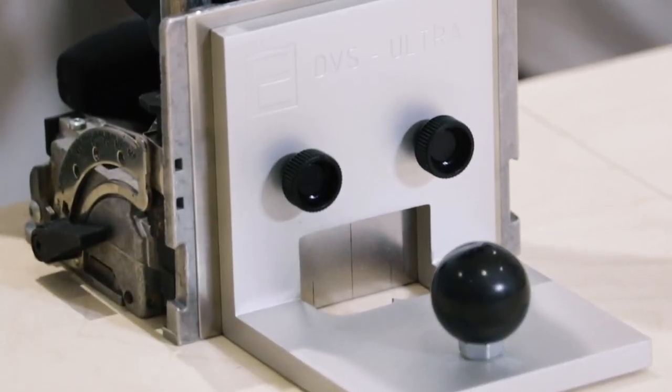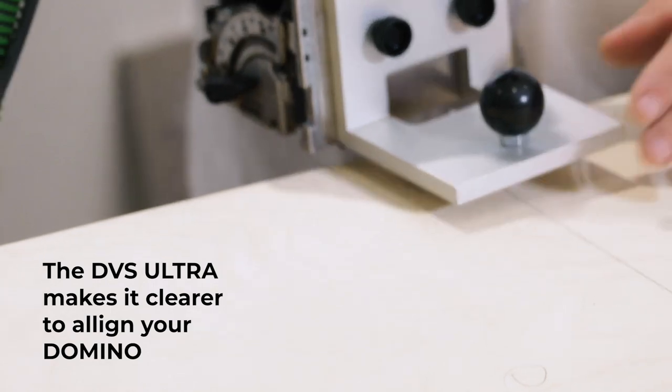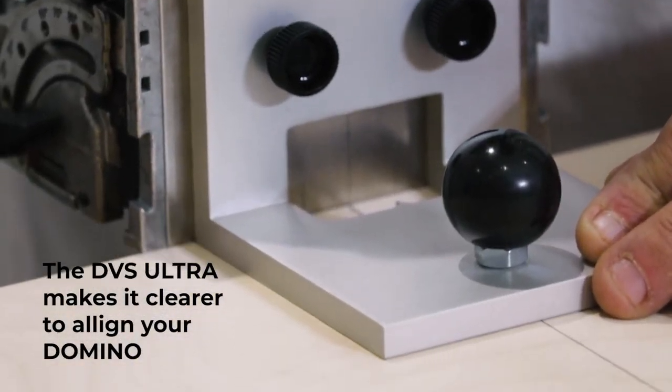The DVS Ultra makes it even clearer when aligning your Domino and has an extra white base making it more sturdy.